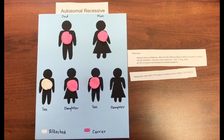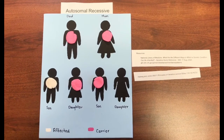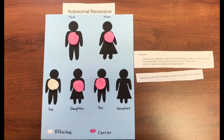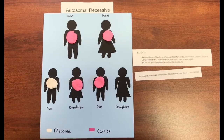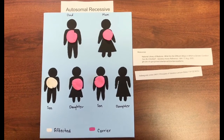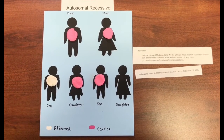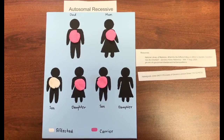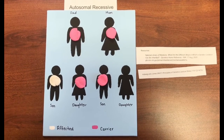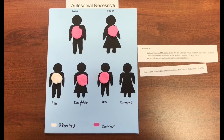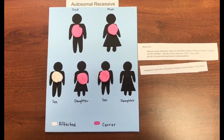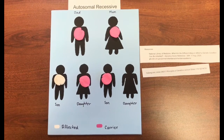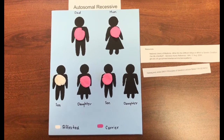Unlike X-linked recessive and X-linked dominant, with autosomal recessive the gender of the child does not matter. It appears in both sexes equally, it skips generations usually, and affected offspring will have unaffected parents that are carriers. An example is sickle cell anemia.